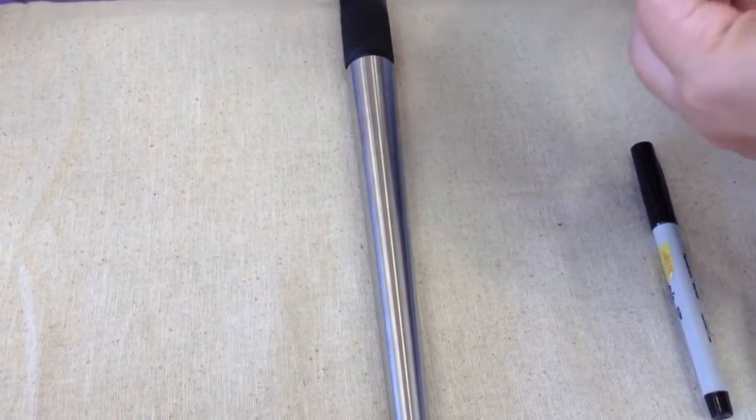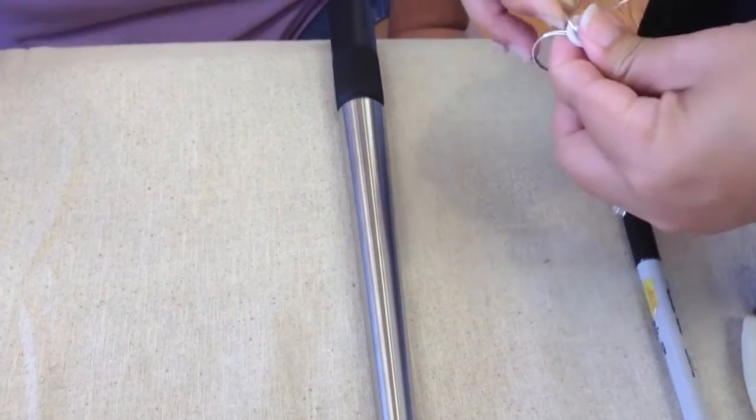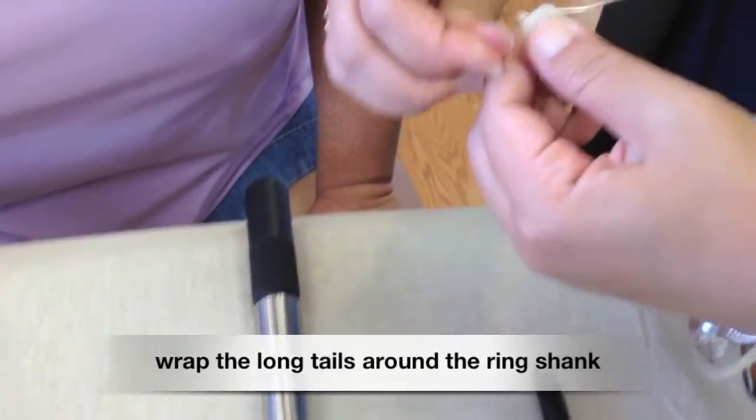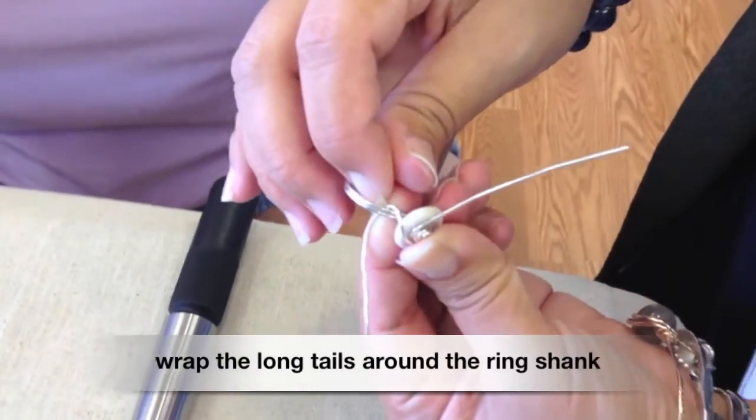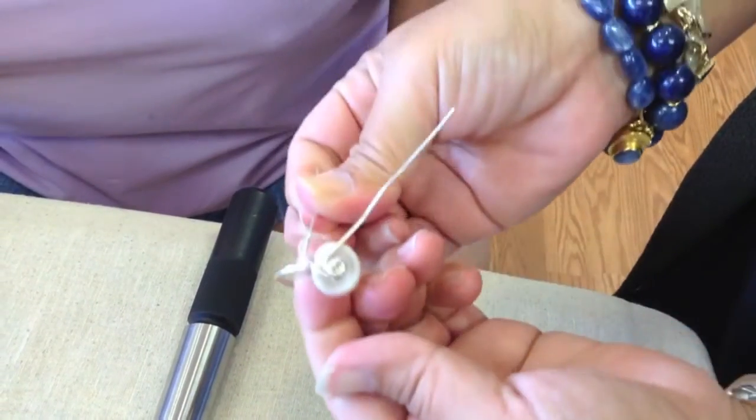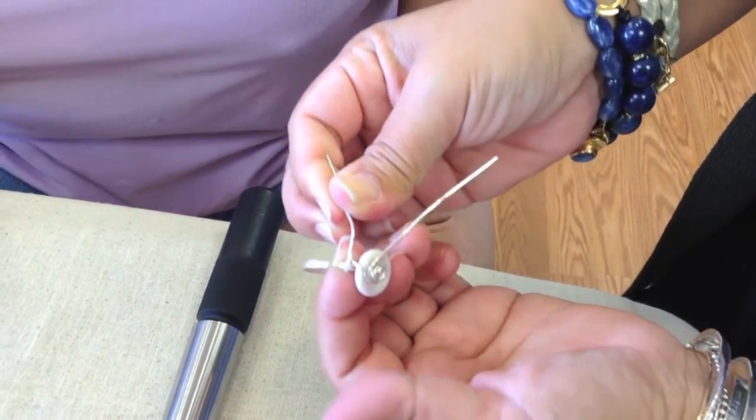Now we'll start wrapping the long wires around the ring shank. When you're wrapping make sure that you're holding the ring tight and secure in your fingers because as you pull those wires tighter you don't want your ring to start shrinking.